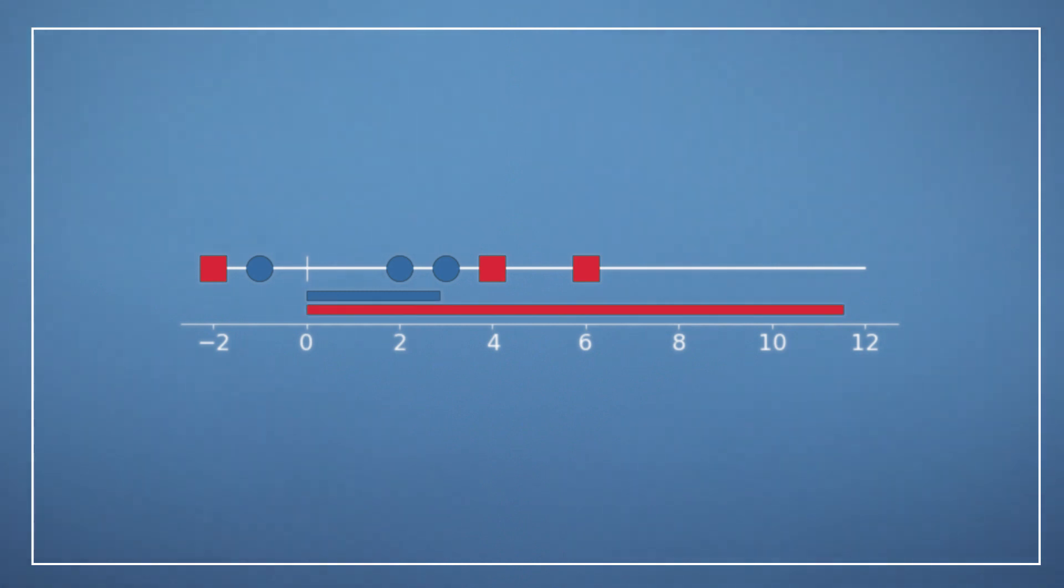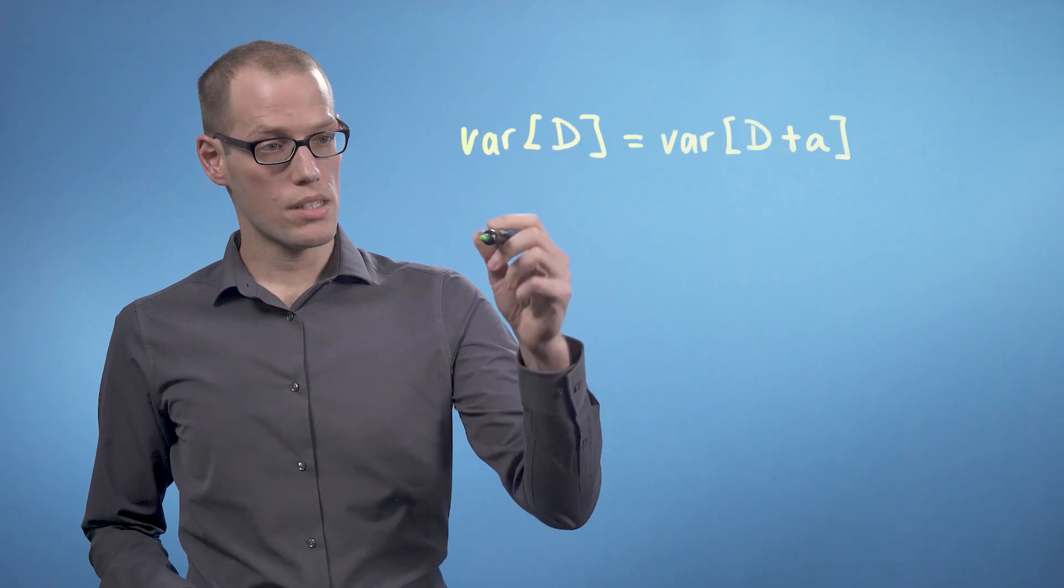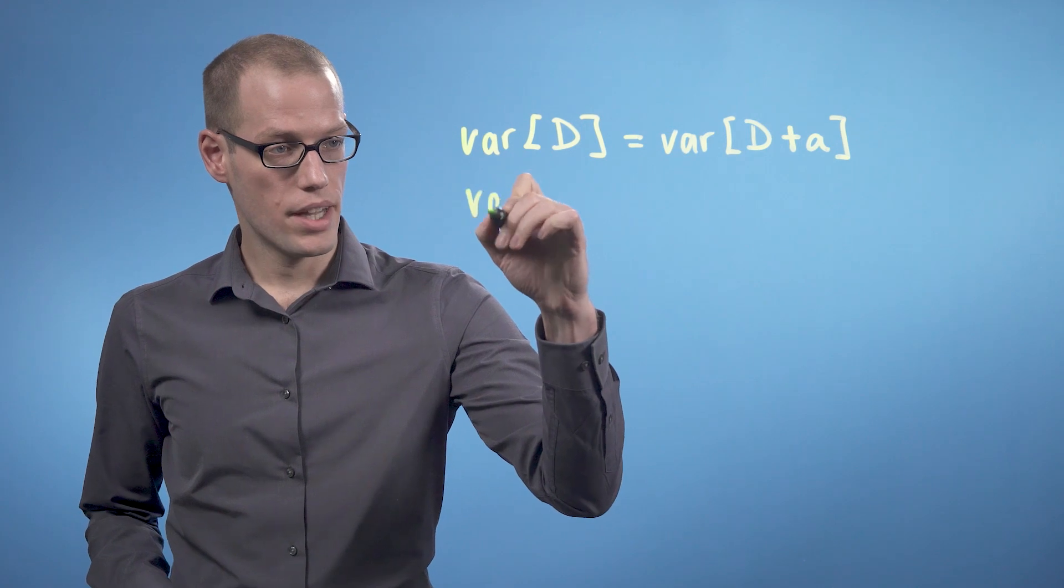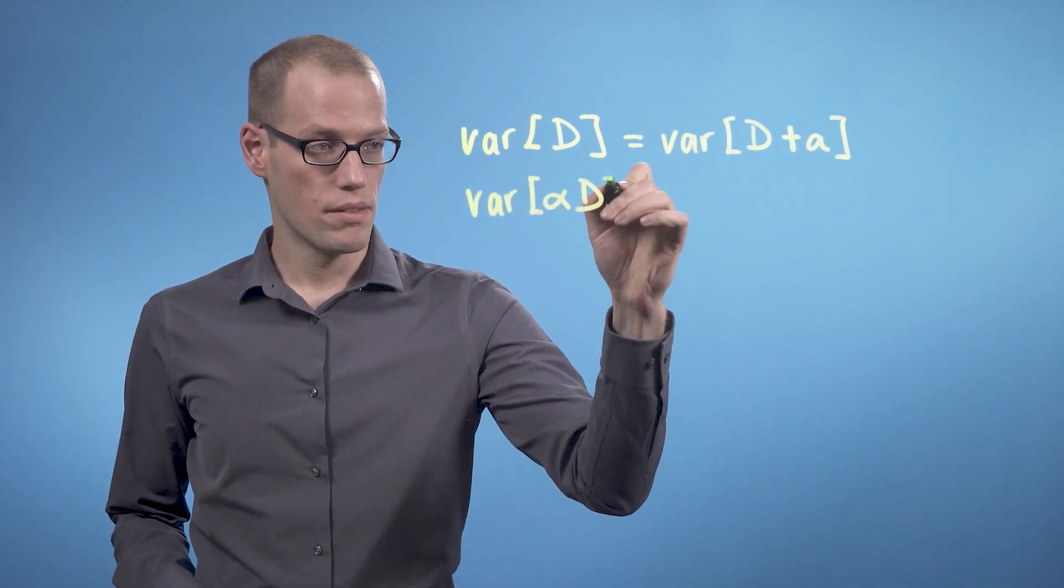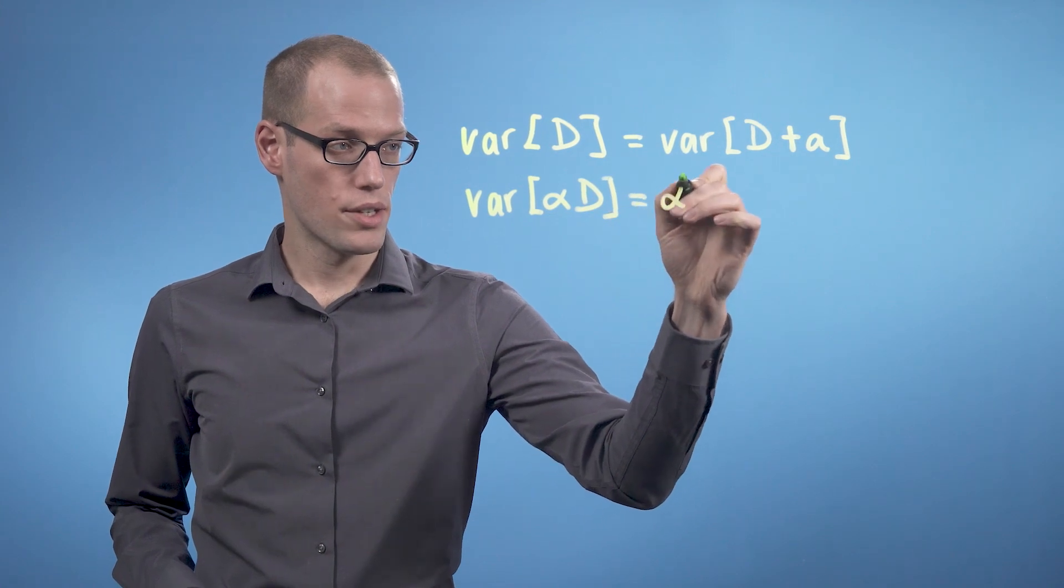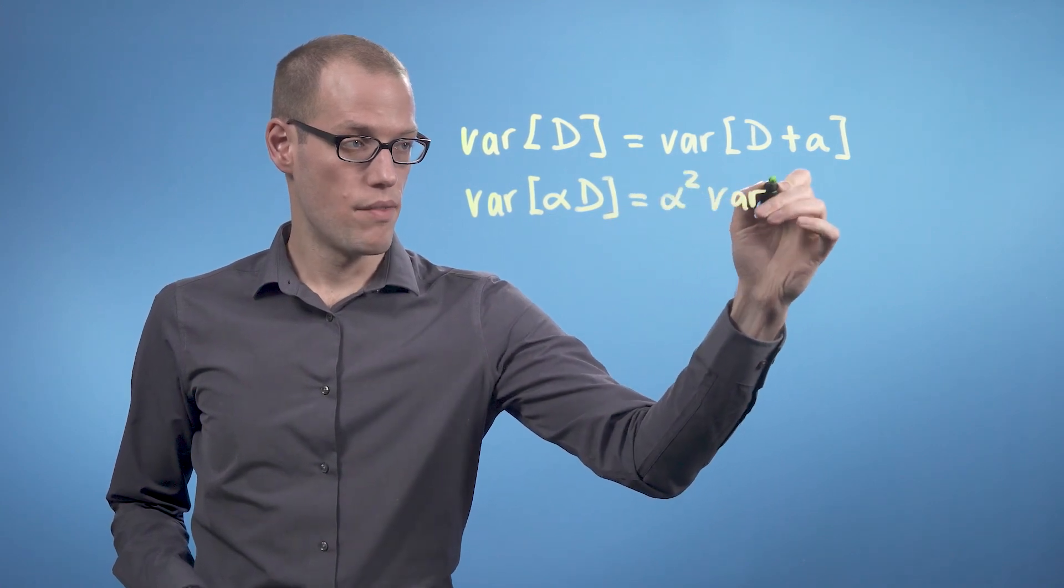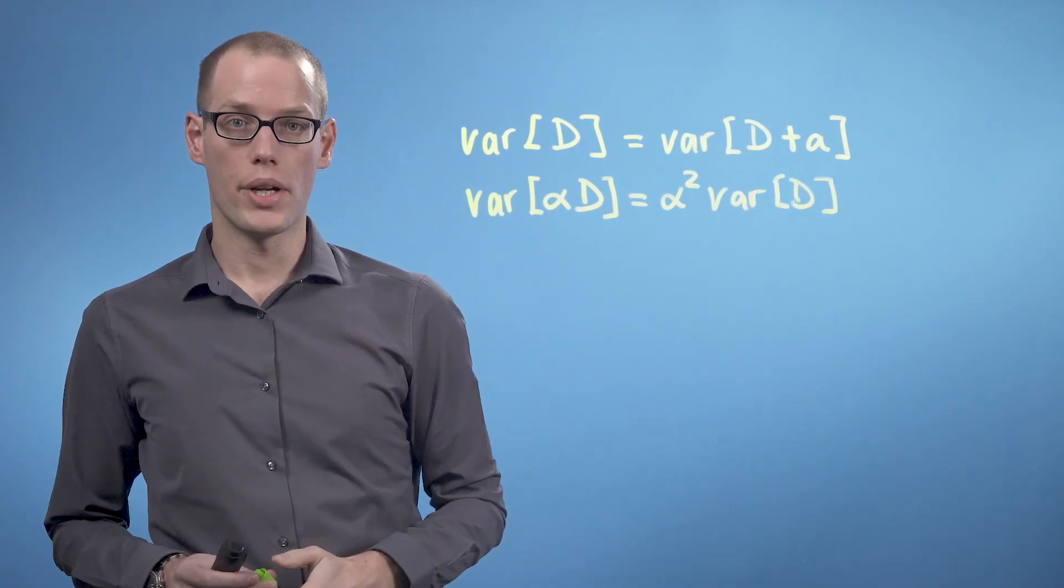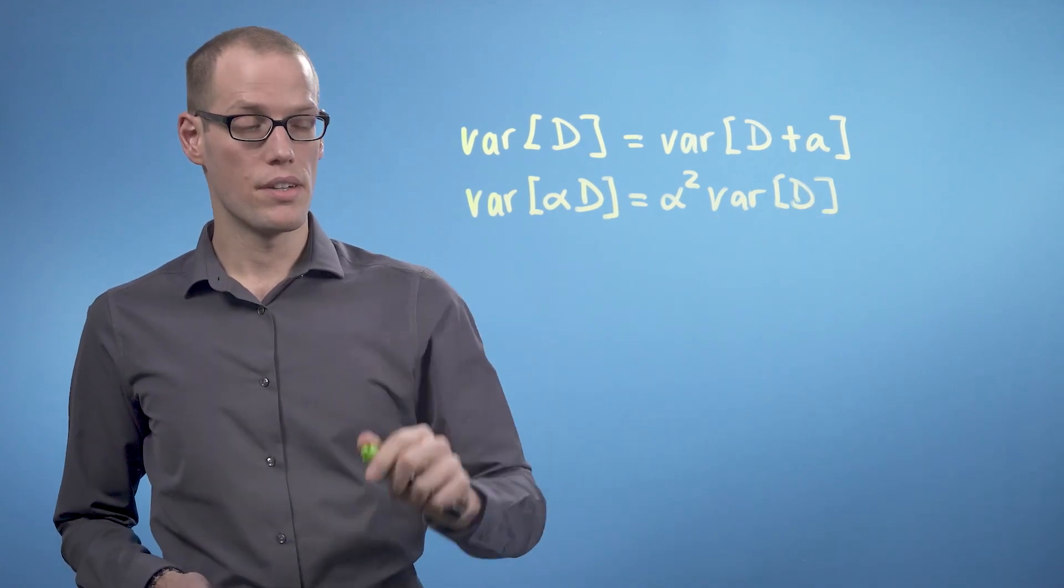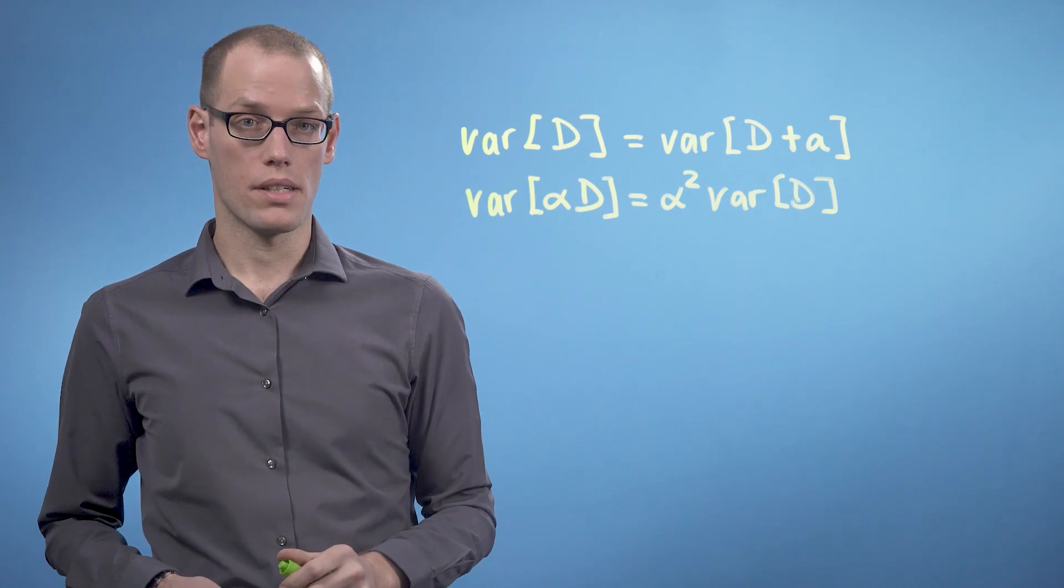And the variance is therefore 4 times as big as it used to be. And our next result is that the variance of alpha times D is alpha squared times the variance of D, where alpha is a real number that scales every individual element in the data set D.